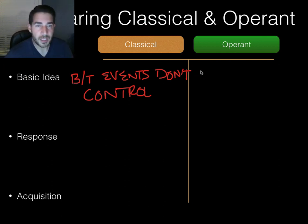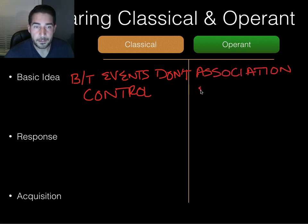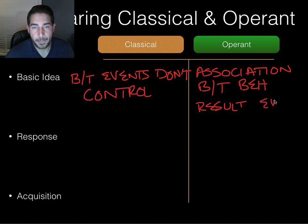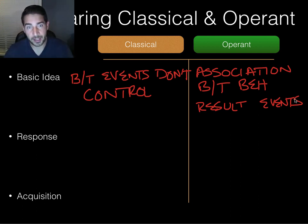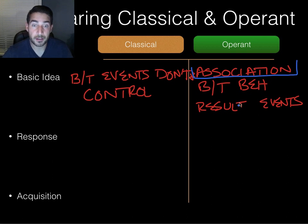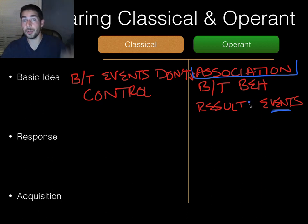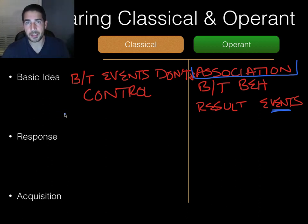Operant conditioning is where organisms learn associations between their behavior and the resulting events. So the environment gives you some sort of stimulus and you are either rewarded or punished for that, so you learn to associate the reward or punishment with the event — you associate the behavior with the event. With classical conditioning, you don't actually do anything; you learn between events that you can't control.